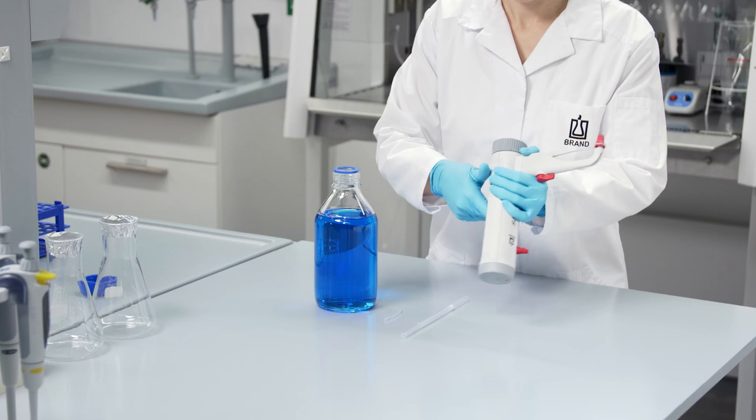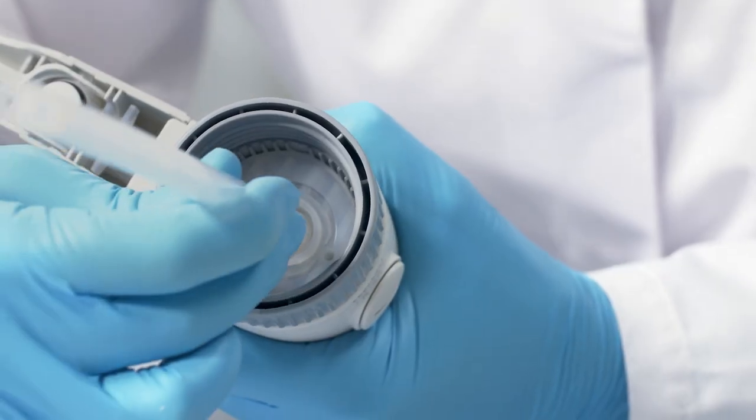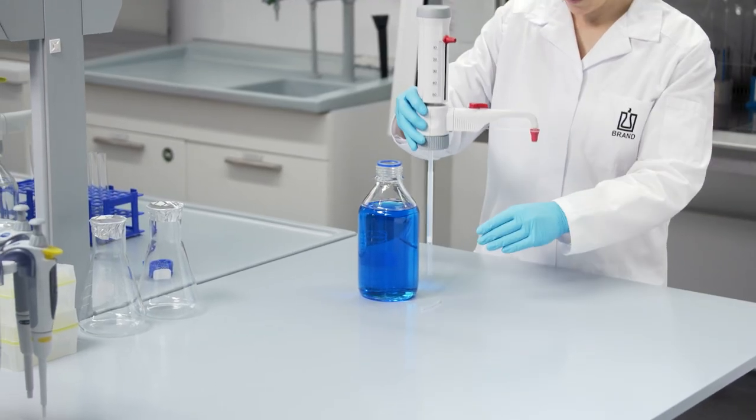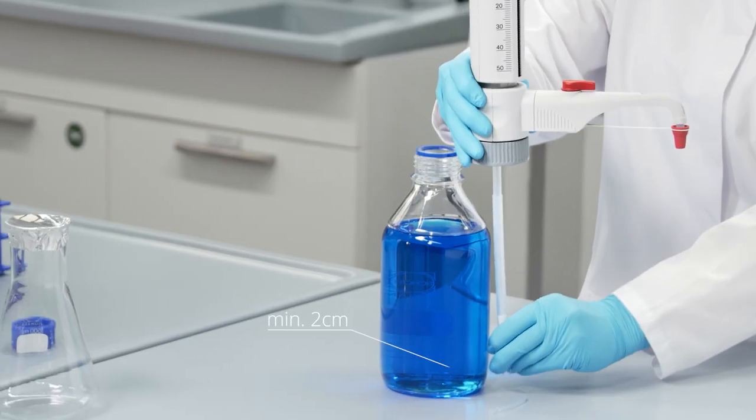Simply adjust the length of the filling tube to the bottle height and attach it. Keep a minimum distance of 2 cm from the bottom of the bottle and avoid aspiration of solids.